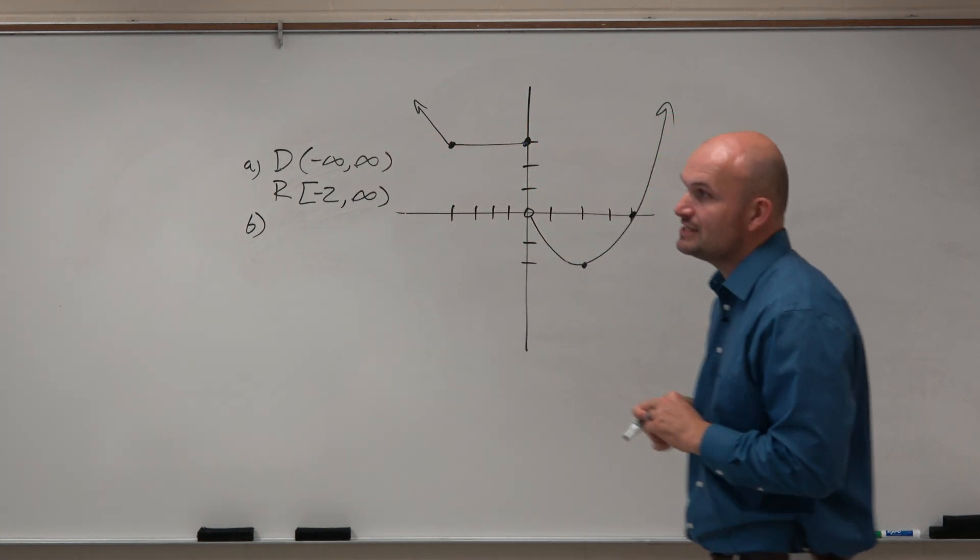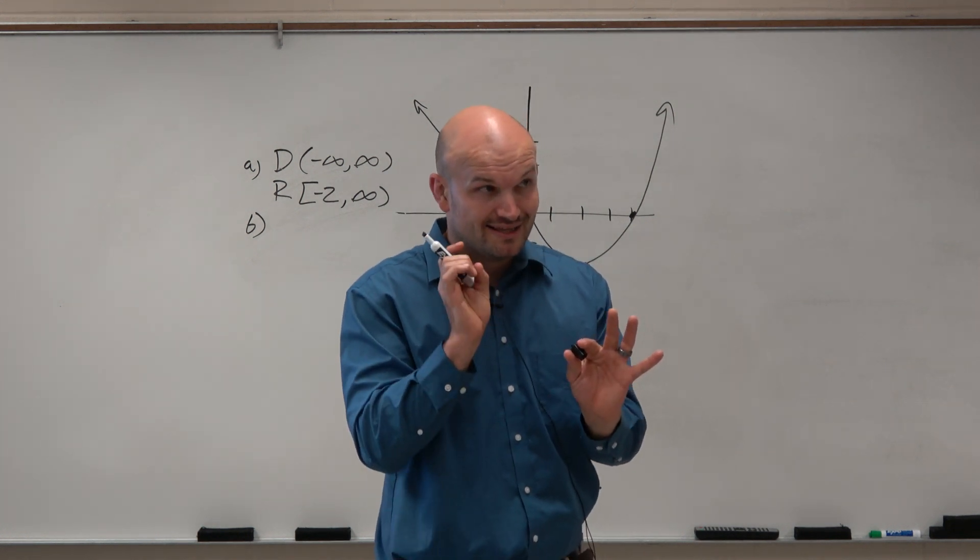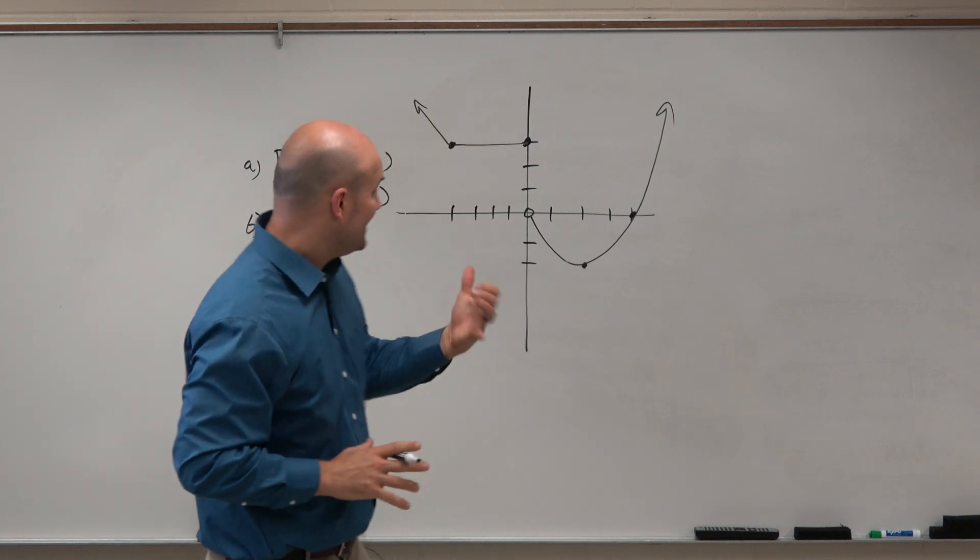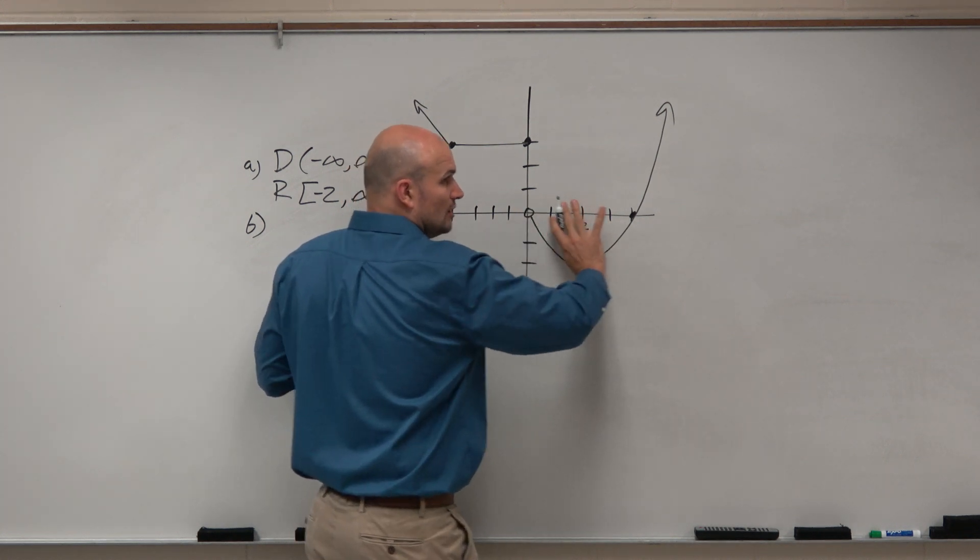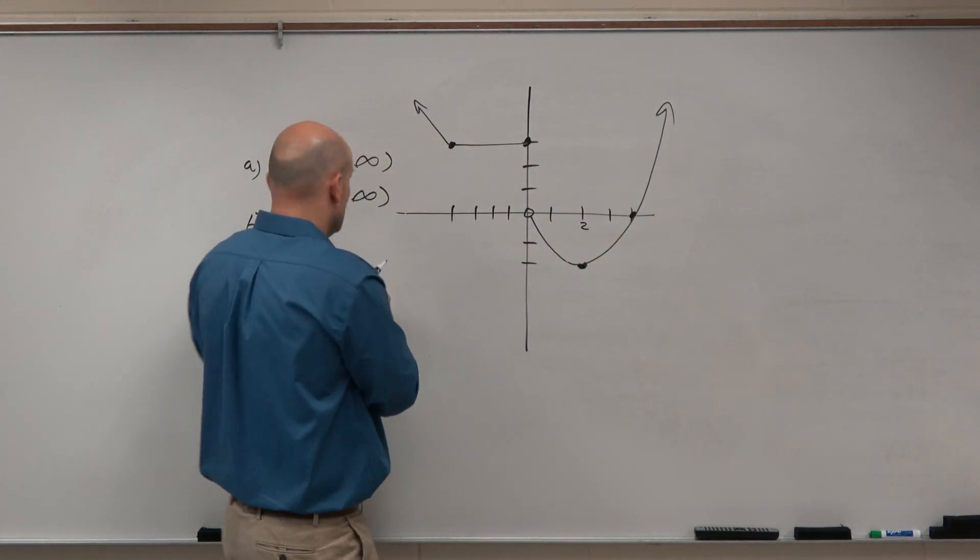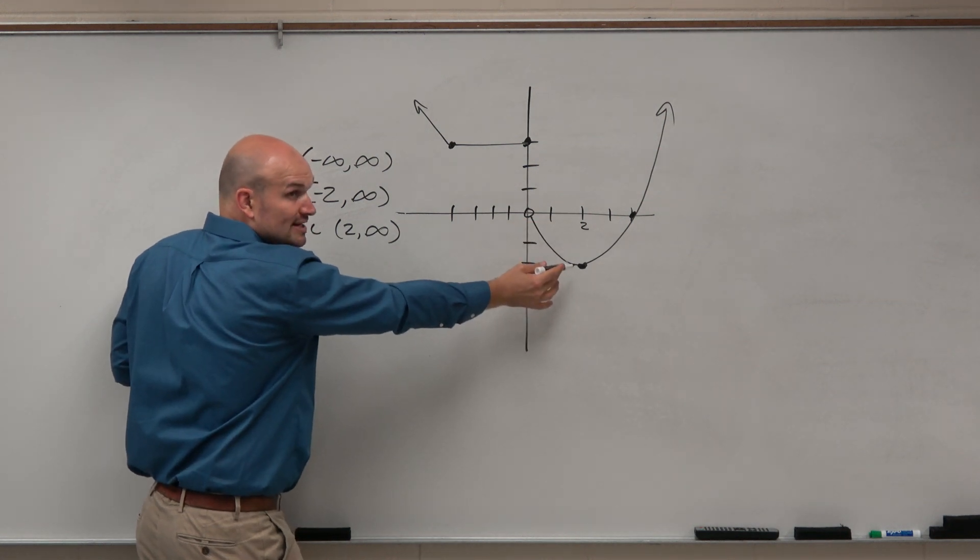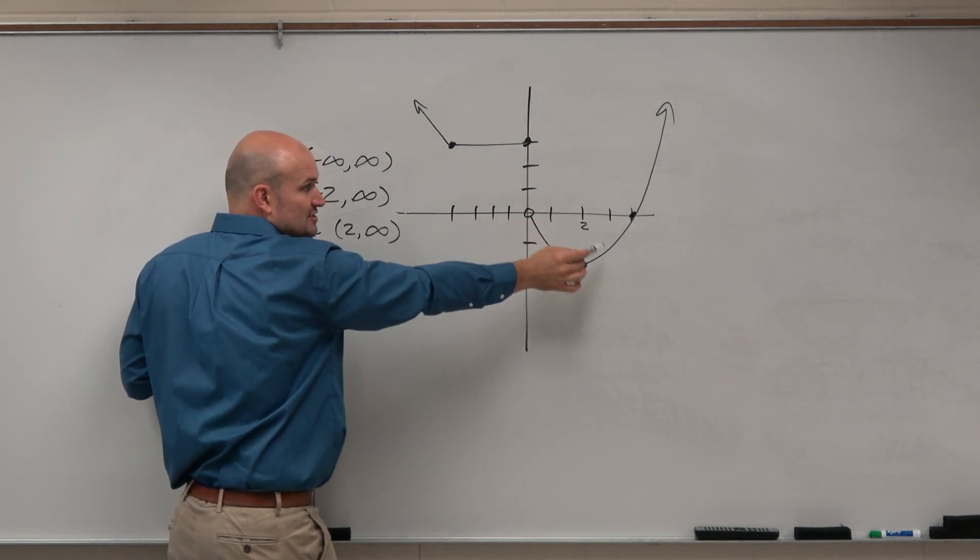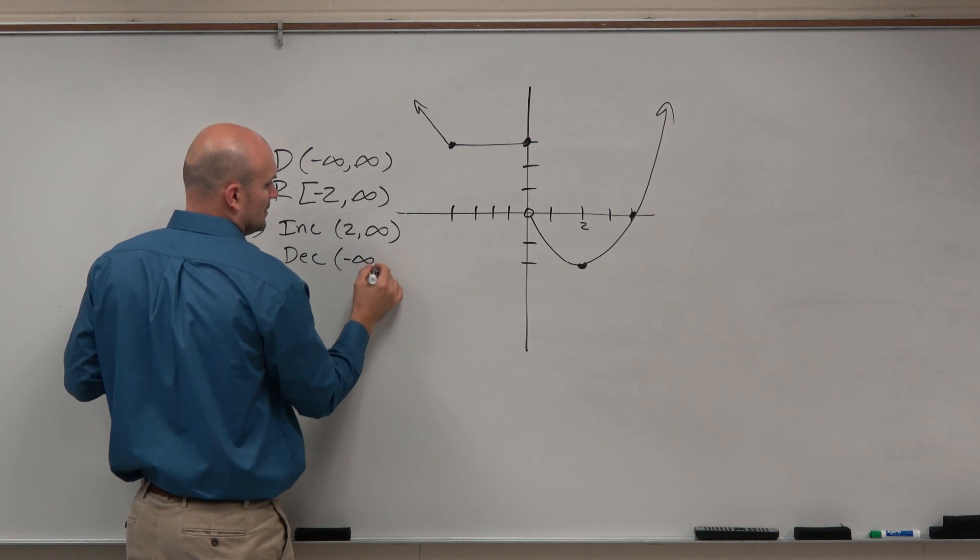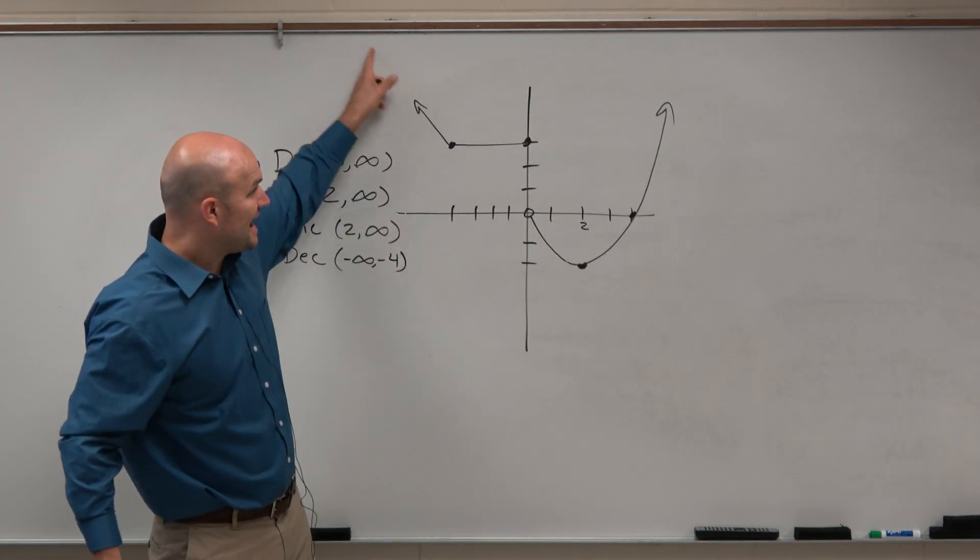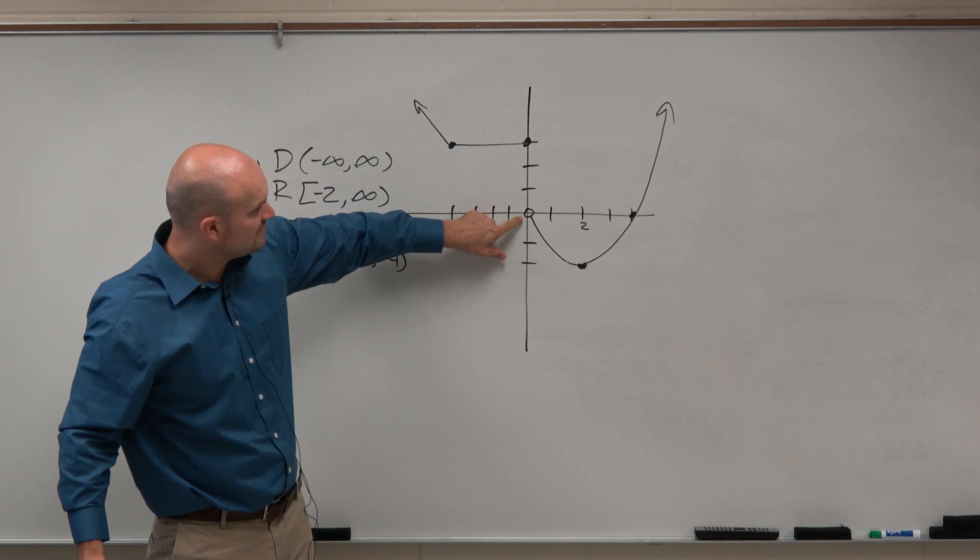All right. The next one is going to be the increasing, decreasing, and constant intervals. So again, very important for you guys to understand, this is the x values. We're using the x values to describe increasing. When is the graph going up? Well, it looks like it's going up from here, from the x value of 2 all the way to infinity. Correct? So I'm going to say it's increasing from 2 to infinity. Not negative 2, how low it is, but from what x value does it start to go up. We can say it's decreasing from negative infinity to negative 4. Again, not negative infinity to 3. We're talking about x values, not the y values. It's also decreasing from 0 to 2.